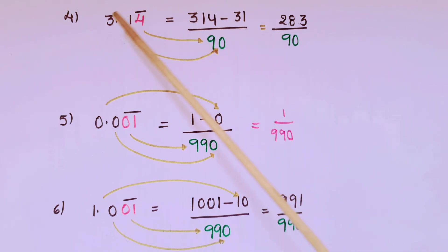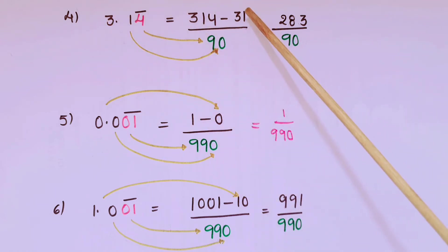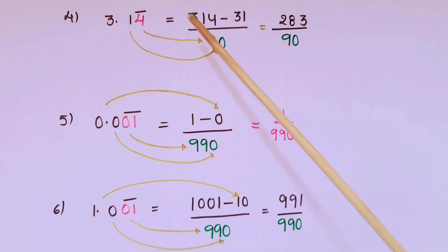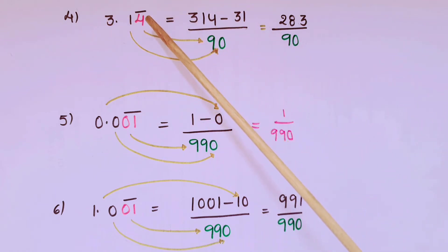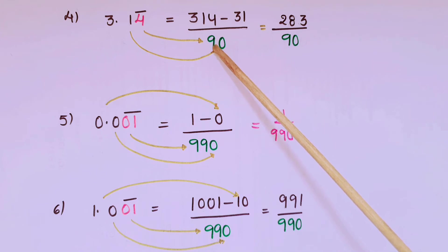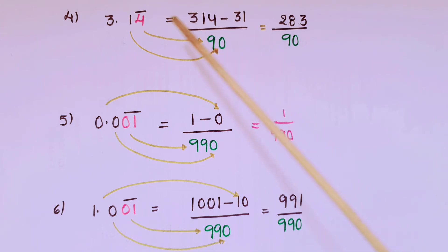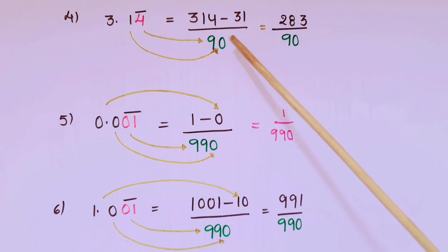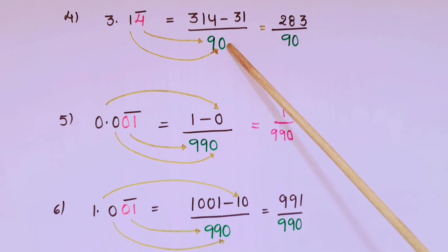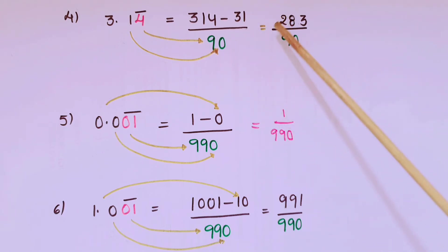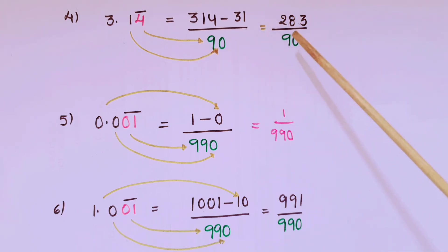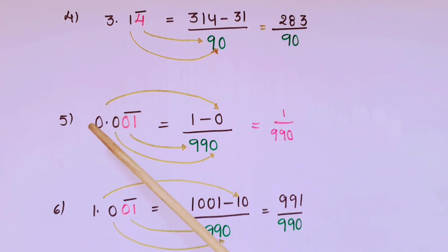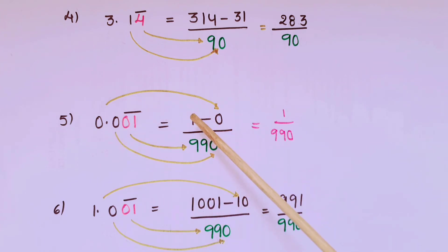The next one is 3.14 bar. First write the number 314, then minus the remaining digits which are not below the bar — those are 3 and 1, so write 31. Below the bar there is only one digit, so write 9, and after the decimal there is only one digit that is not repeating, so write 10. That is equal to 283 by 90.